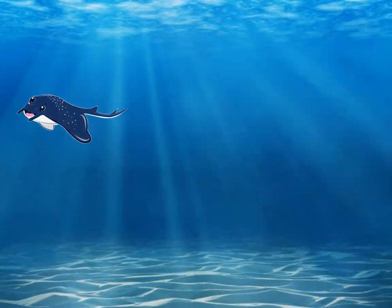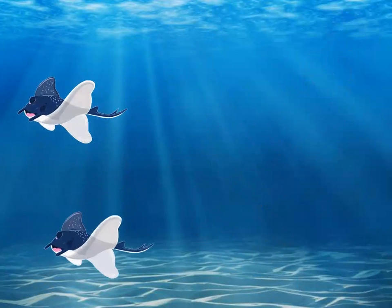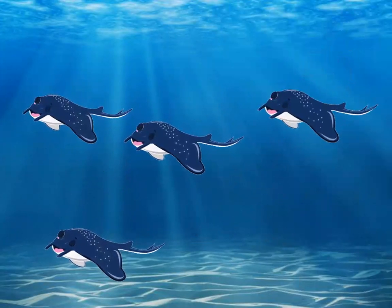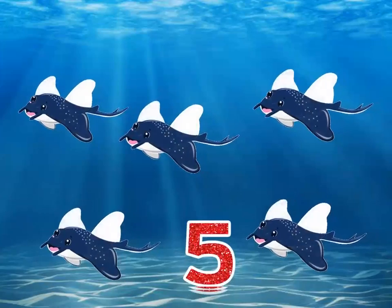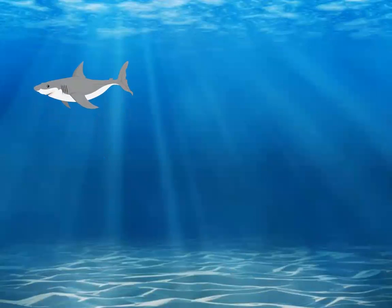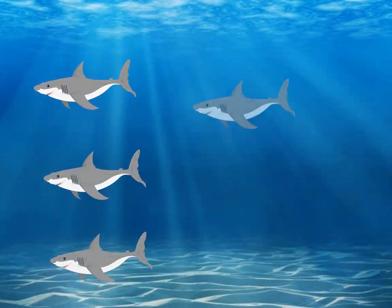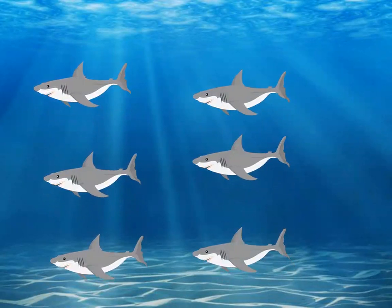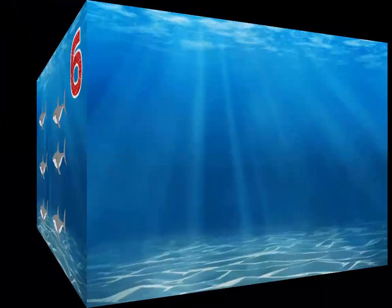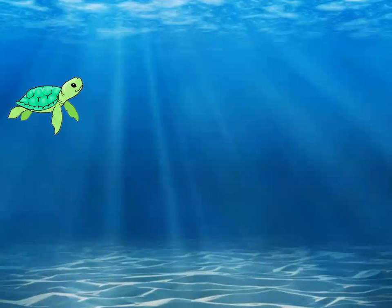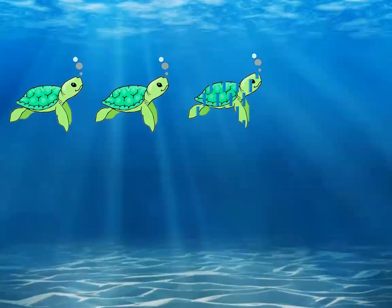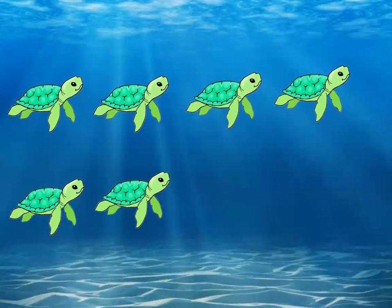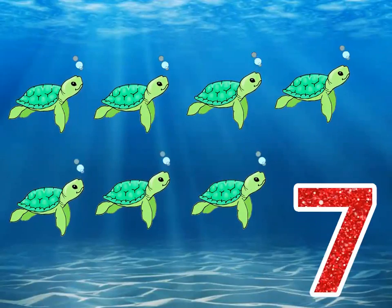How many stingrays do you see here? One, two, three, four, five — five stingrays, well done. How many sharks do you see here? One, two, three, four, five, six — very good, six sharks. How many sea turtles do we see? Let's count: one, two, three, four, five, six, seven — well done, seven sea turtles.